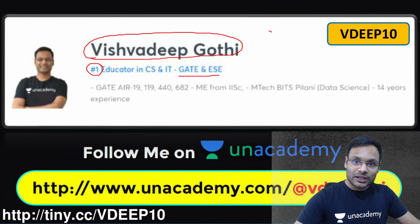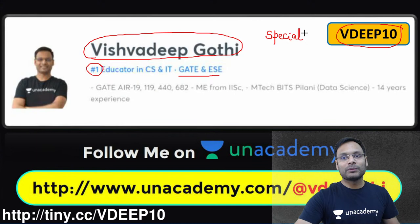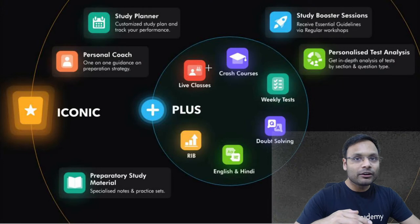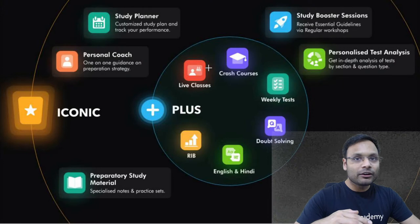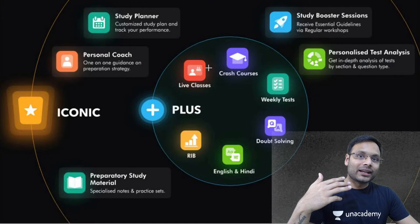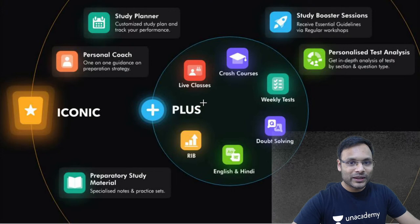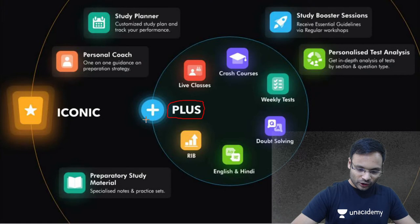Go to Unacademy.com or download the Unacademy Learner app. Create your profile for Gate EAC category and follow my profile to access my special classes — absolutely free. If you are a first-time learner, use the code VDIEP10. If you're preparing for Gate but facing issues with doubt solving, guidance, or execution of your plan, all these problems we can solve for you on Unacademy Plus, which will change your entire Gate preparation.